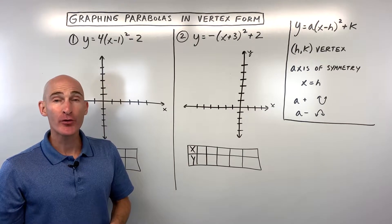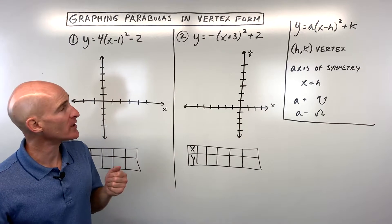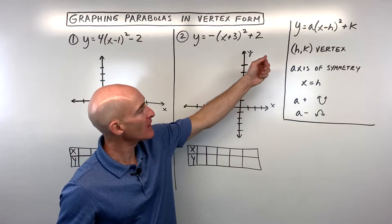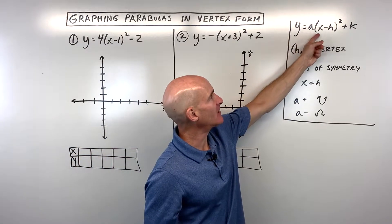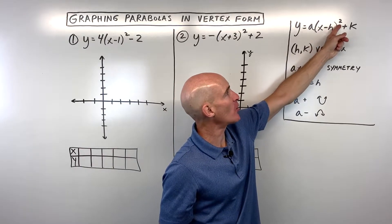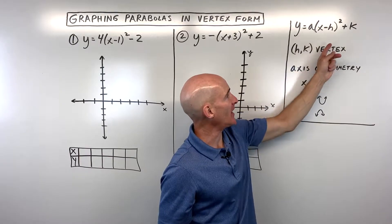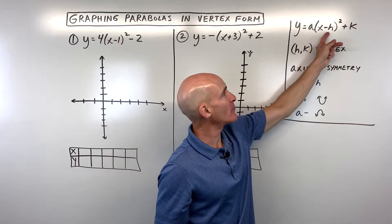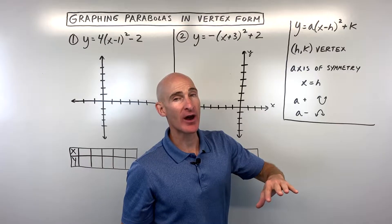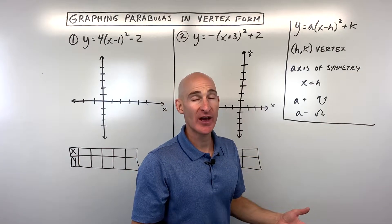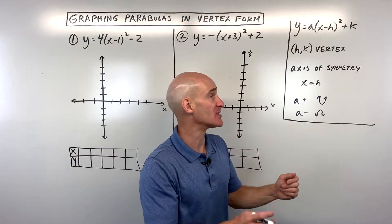In this video, you're going to learn how to graph parabolas in the vertex form. So what exactly is the vertex form? When it's in this form, y equals a times the quantity x minus h squared plus k, the vertex is at h, k. Just remember that the number grouped with the x has the opposite effect on the graph. So if it's x plus 7, you'd actually be going left 7. If it was x minus 7, that'd be a positive 7 to the right.